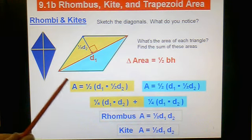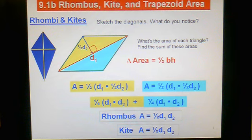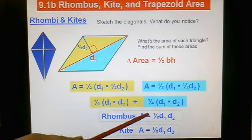Now, if you knew the side lengths, you certainly could call a rhombus a type of parallelogram and use base times height from 9.1a. But this is in terms of the diagonals. If you're given the diagonals, this is a much more efficient way to find the area of a rhombus or find the area of a kite.